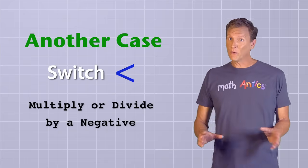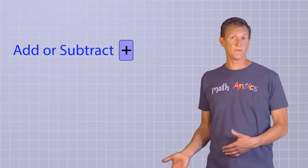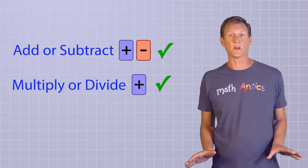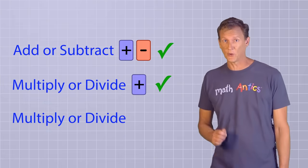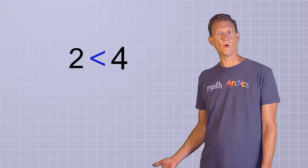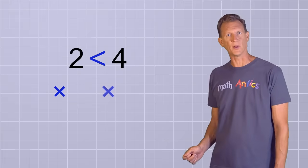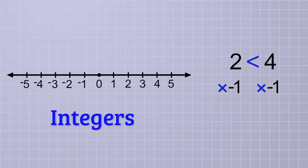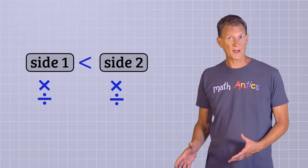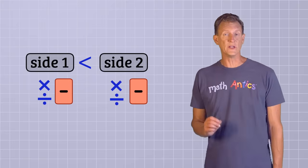Another case where you need to switch the inequality sign is whenever you multiply or divide both sides by a negative number or term. You don't need to do this for any other operations. You can add or subtract positive or negative terms from both sides, and you can multiply or divide both sides by a positive term without needing to switch the inequality sign. It's only when you multiply or divide both sides by a negative that you need to flip it. To understand why that's necessary, have a look at the simple inequality 2 is less than 4, and imagine what would happen if you multiplied both sides by negative 1. In a previous video about integers, you learned that multiplying by negative 1 switches a number to the opposite side of the number line, and vice versa. Doing that to two different numbers actually changes their order. Positive 2 is less than 4, but negative 2 is greater than negative 4. That's why every time you multiply or divide both sides of an inequality by a negative, you need to switch the inequality sign.